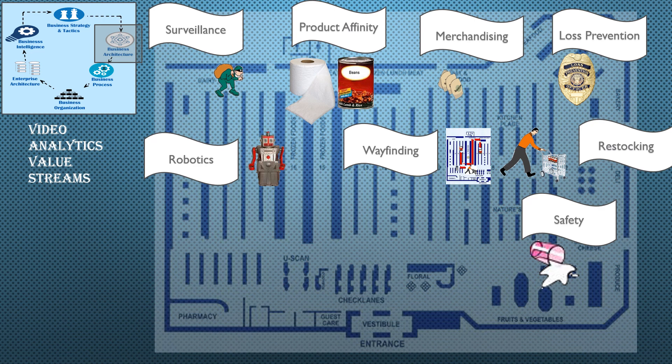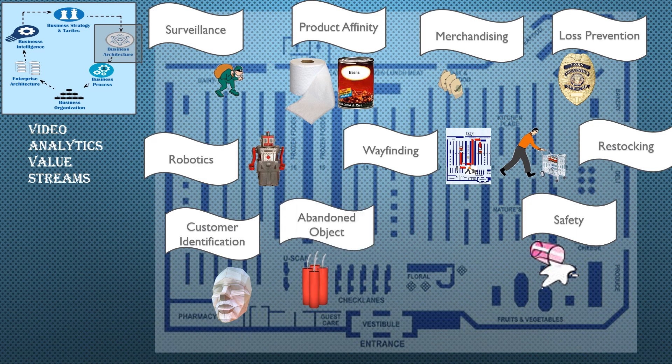Robotics have multiple uses — there's a whole video on robotics in retail that you might want to check out. Customer identification through things like facial recognition are key to help with product affinity analysis. Looking for abandoned objects — if somebody sits something down that doesn't belong somewhere, it makes sure that you pick it up and keep your customers safe. And then finally, of course, the point of sale — that's a huge body of work.